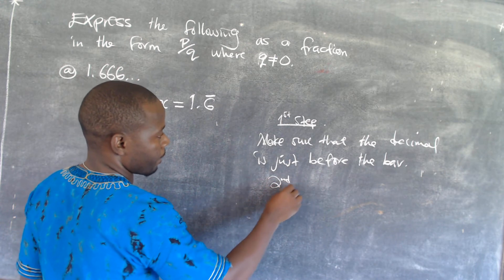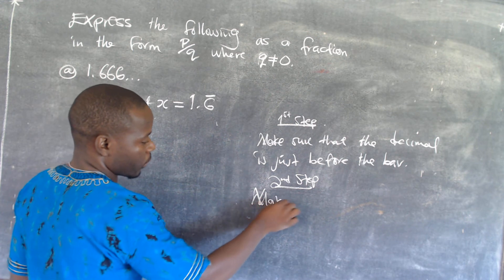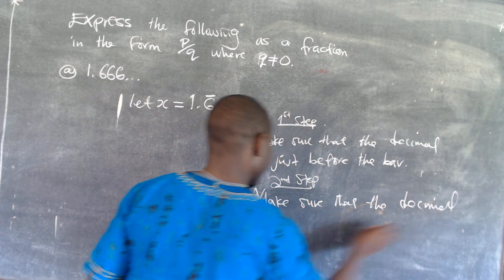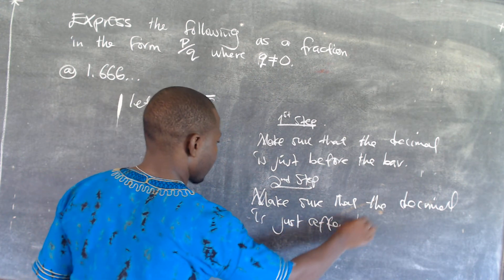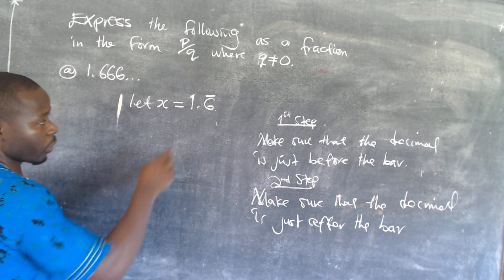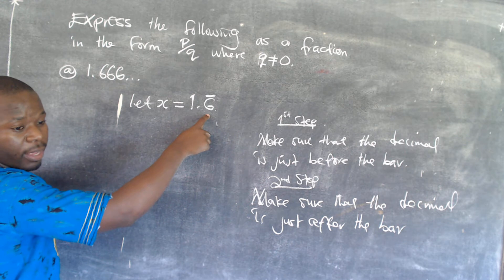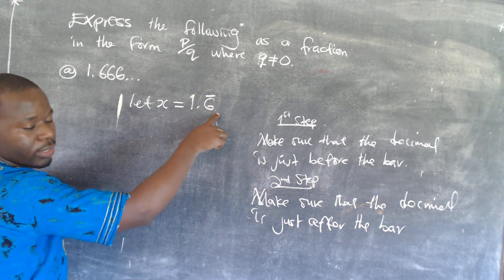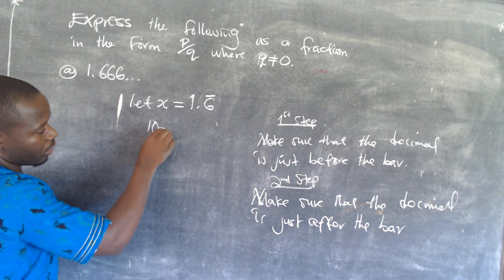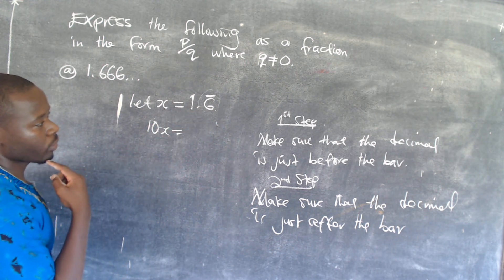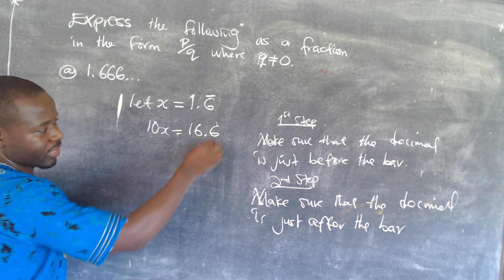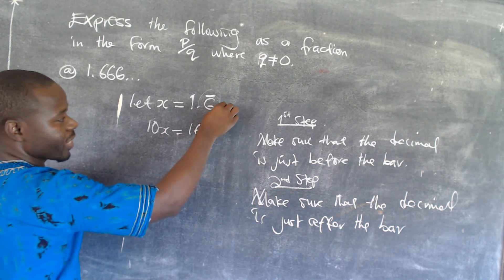The second step: we make sure that the decimal is just after the bar. Here, we need to move this decimal so that it can be just after the bar. For us to move this decimal from this point to that point, it is going to move 1 place. So you need to multiply by 10. Multiplying by 10, you are going to get 10x. 10x is equal to 10 times 1.6̄, which gives 16.6̄. Since 6 is still repeating, you can now subtract these two equations.